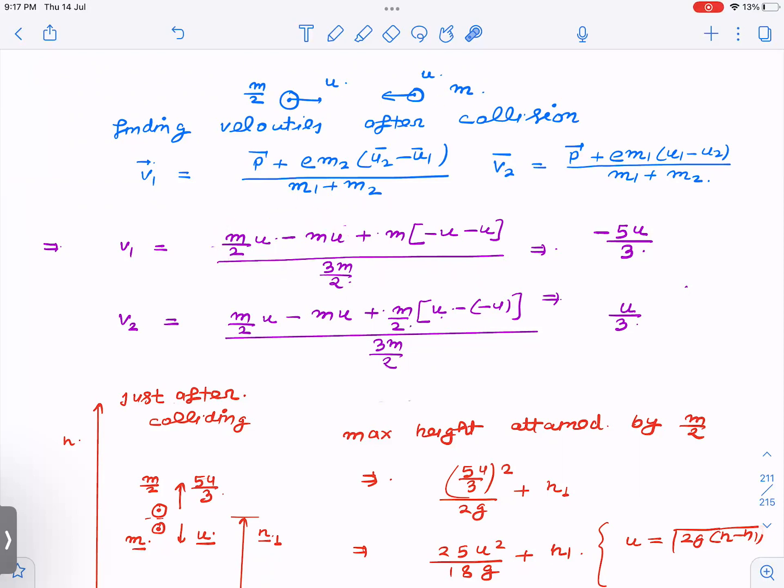v₁ equals initial momentum - you can see mu/2 minus mu, this is initial momentum, plus m₂u₂. m₂ is m/2, u₂ is -u, right? Because it is in this direction. u₂ minus u₁, u₁ is positive, so I get -5u/3. You can verify.